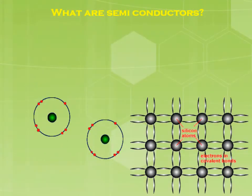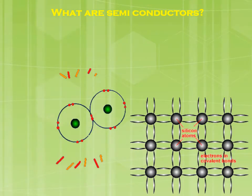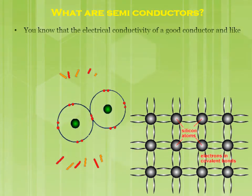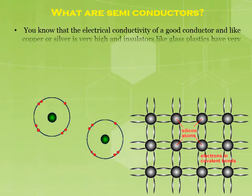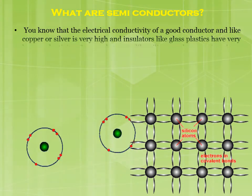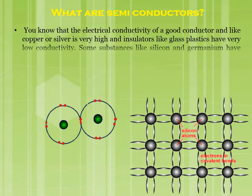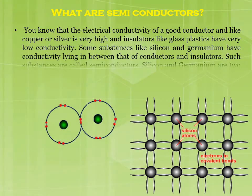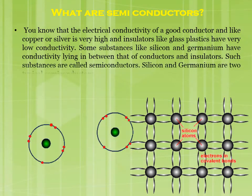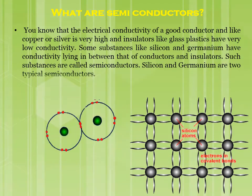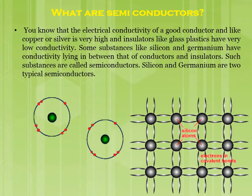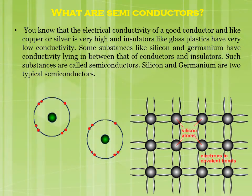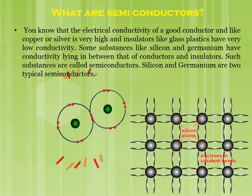What are semiconductors? The electrical conductivity of good conductors like copper or silver is very high, and insulators like glass and plastic have very low conductivity. Some substances like silicon and germanium have conductivity lying in between that of conductors and insulators. Such substances are called semiconductors. Silicon and germanium are two typical semiconductors.